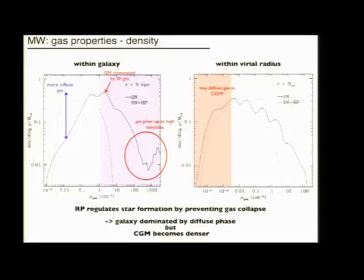If you look at the gas within the virial radius, the CGM, you see the opposite effect. The diffuse gas is reduced, so it seems like a lot of this gas mass is being transferred to the halo.